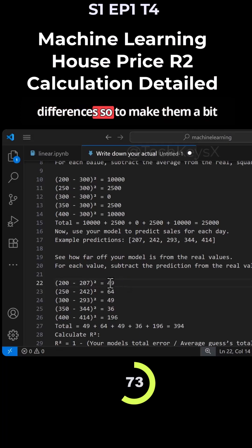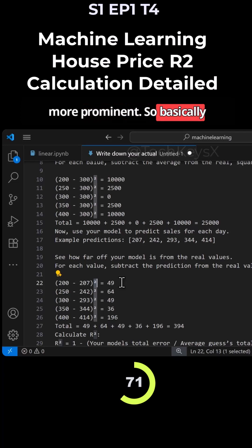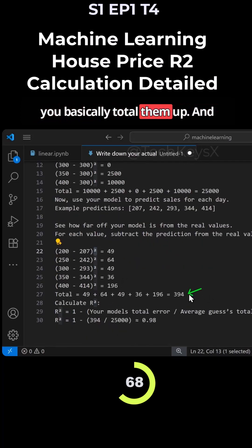Now notice here we are squaring the differences to make them a bit more prominent, so basically penalizing the mistakes, and then you basically total them up.